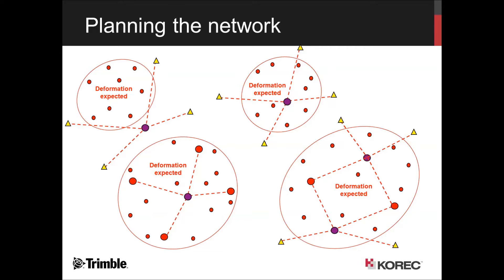A quick think about planning the network: are we going to set up inside the zone of influence or outside it? Where are our reference objects going to be, how many will there be, and whereabouts are they? If they're inside the zone of influence, perhaps with prisms and GPS on top of them, we can keep an eye on those reference objects and take that into account when we plan the network and as the results come in. We can tweak the network if those reference objects move.